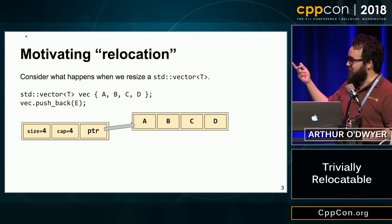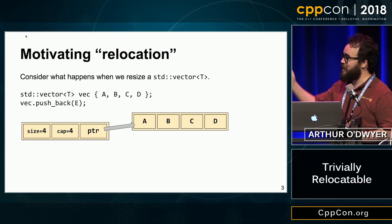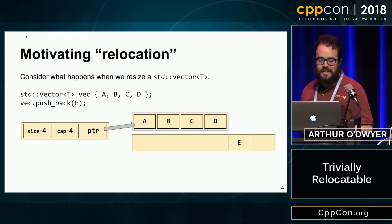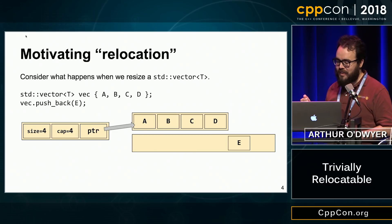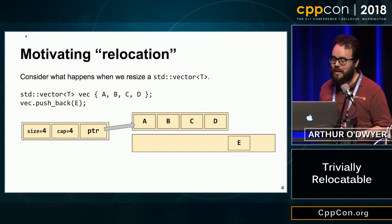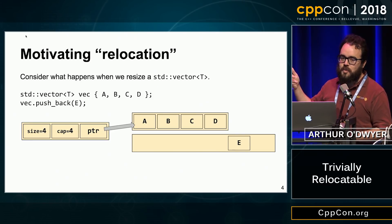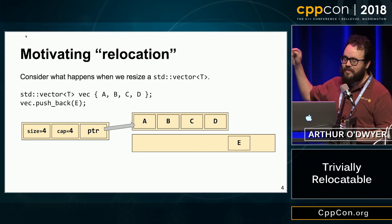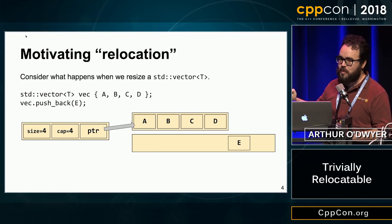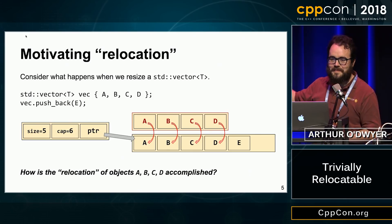Let's say we try to push_back something onto this vector. We don't have any room in the vector — no capacity left — so we're going to allocate some more heap space, and we're going to construct that e. We're going to construct the e first. And then we're going to have to get the objects a, b, c, d somehow from where they are into this new space of memory — we're going to have to somehow relocate them.